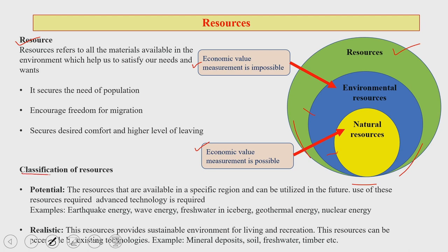What are the different classes of natural resources? There are potential resources and realistic resources. Potential resources are available in a specific region and can be utilized in few areas; their use requires advanced technology development and its application. Examples include earthquake energy, wave energy, fresh water in icebergs, geothermal energy, and nuclear energy.